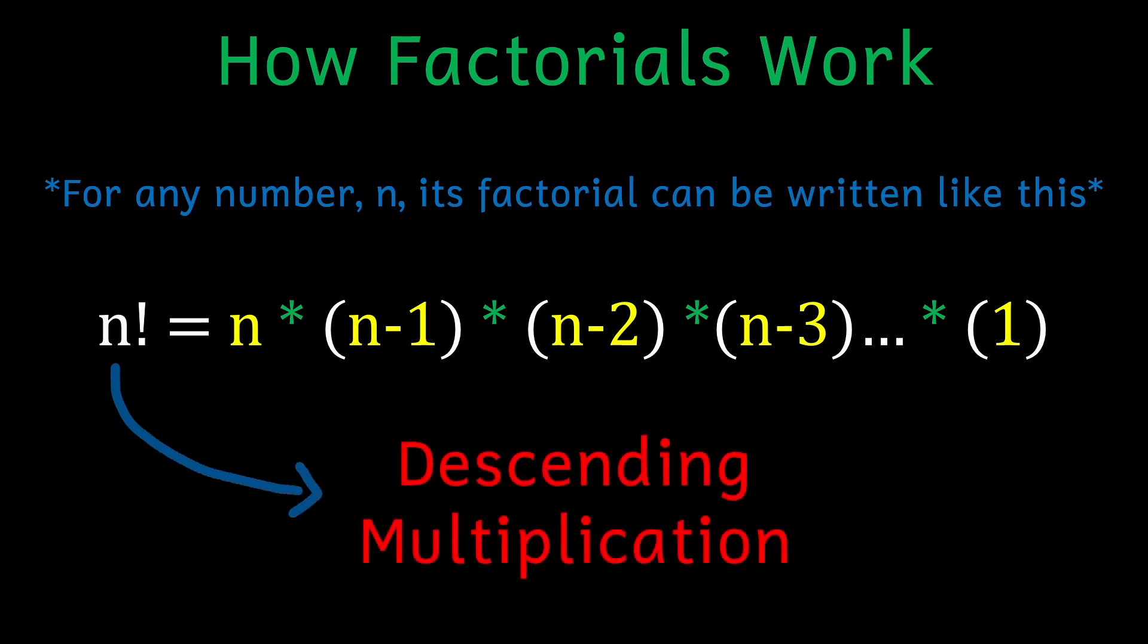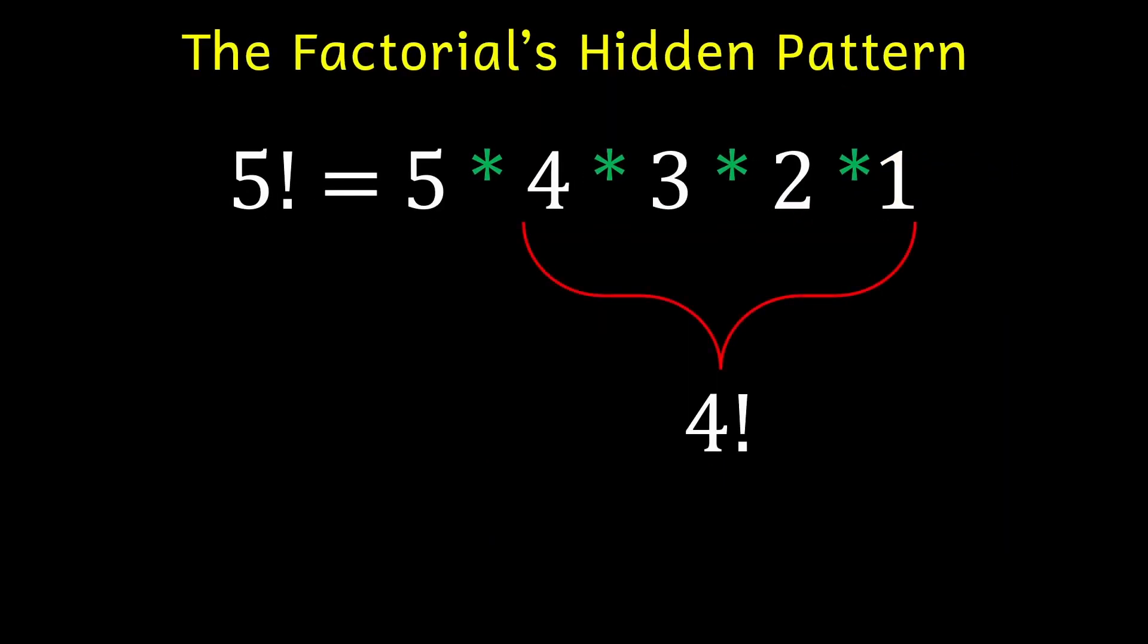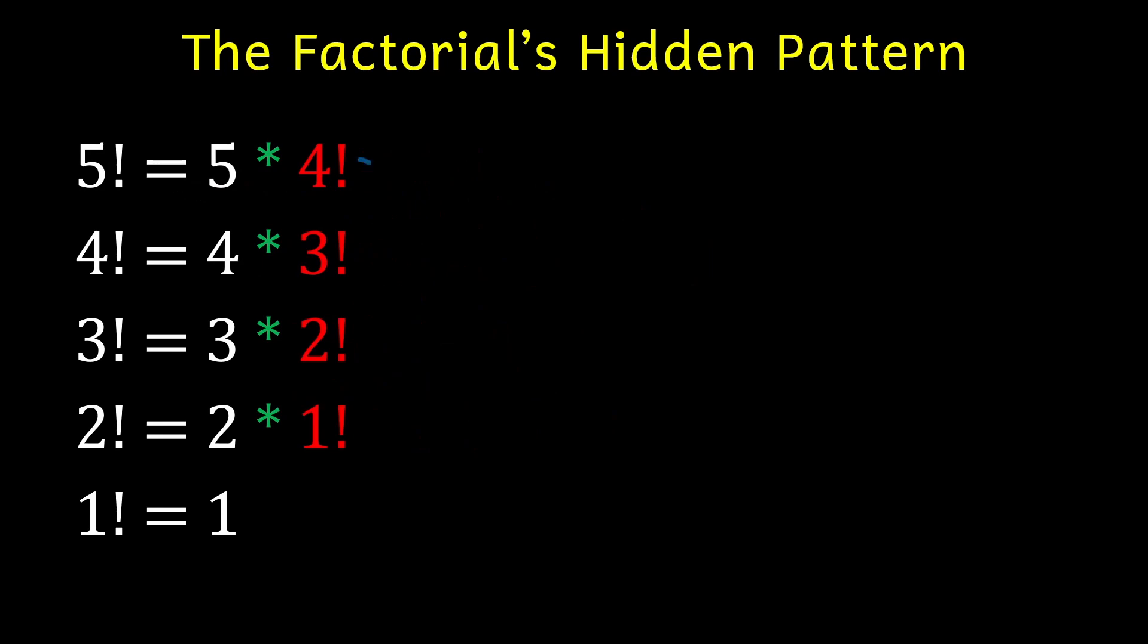But other than representing that idea, factorials contain a useful pattern within themselves that some of you may have spotted. By taking a factorial of a number, you're essentially multiplying it by the factorial of that number minus one. This type of pattern where a process contains a smaller version of itself is called recursion, and it'll help us connect the idea of factorials to our triangles at the start of the video.